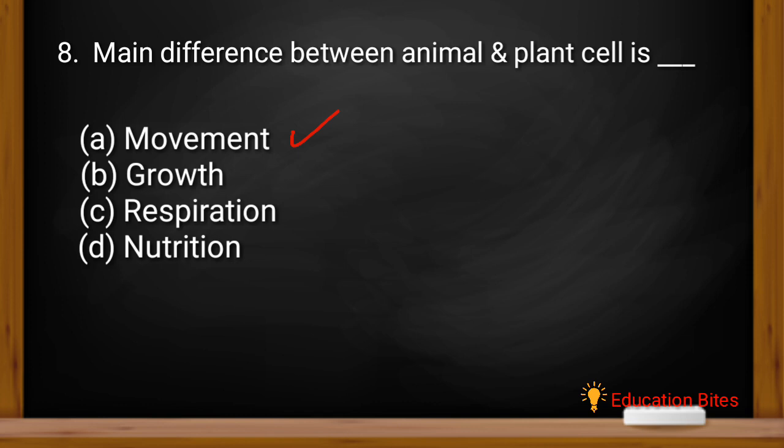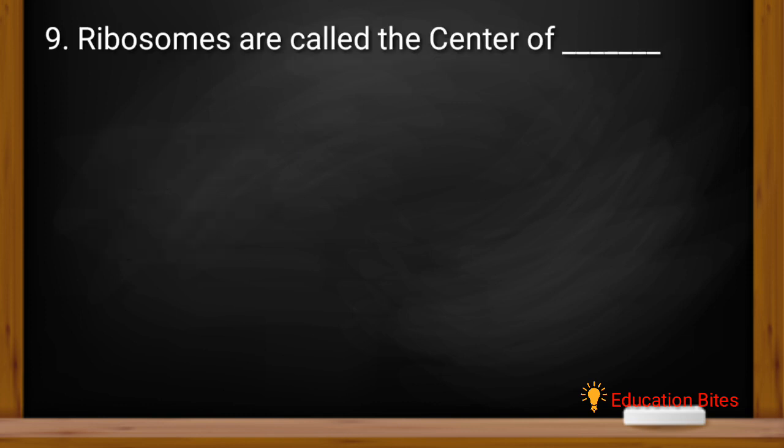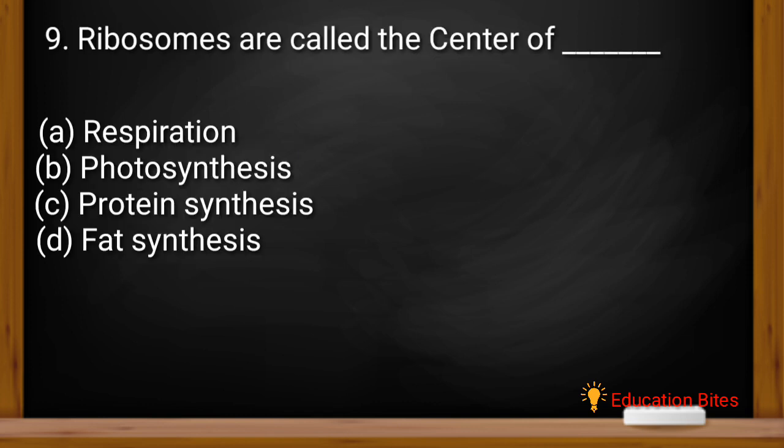So the next question is, ribosomes are called the center of respiration, photosynthesis, protein synthesis or fat synthesis. The correct answer is C, protein synthesis.